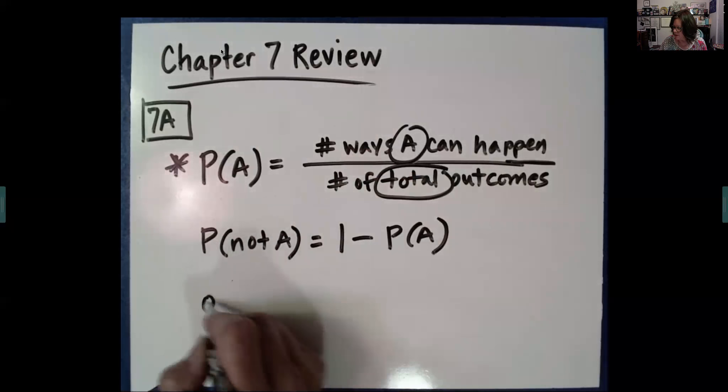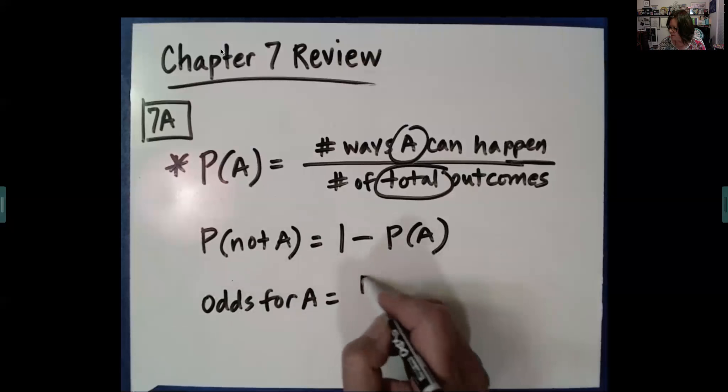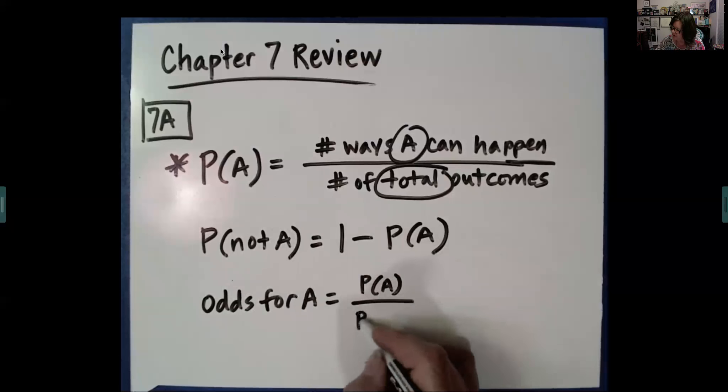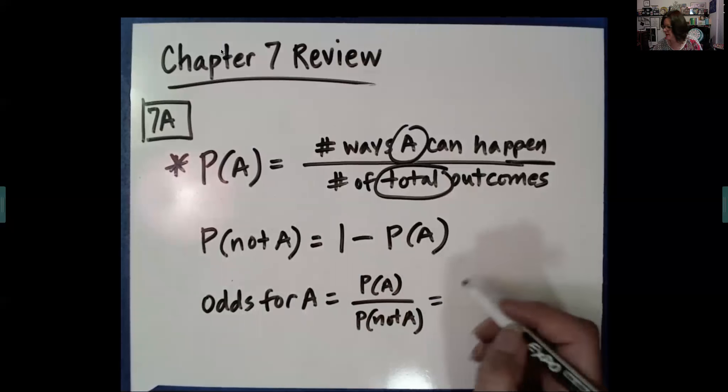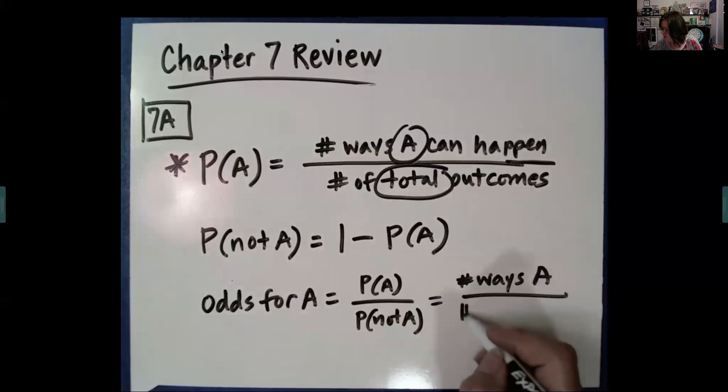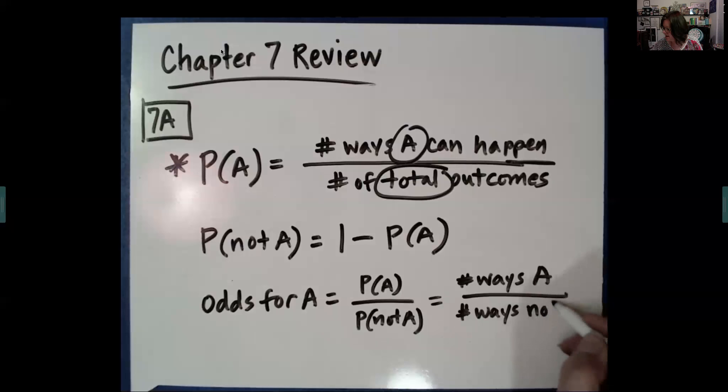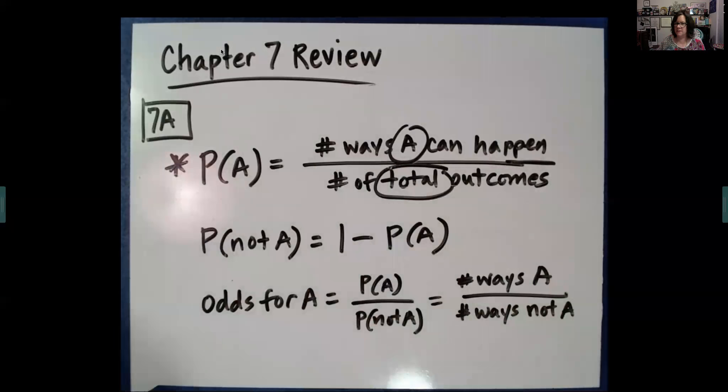And then lastly, in this section, we talked about odds for A. Odds for A is the probability that A happens over the probability that not A happens. Now, each of those is a fraction. I like to think about this better: the number of ways you have A over the number of ways you have not A. That way you don't have a complex fraction. This is our basis for the rest of what we talked about regarding probabilities.